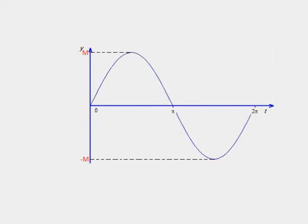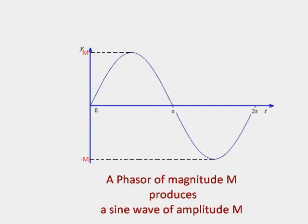The equation of the new sine wave is Y equals M sine of T. Thus, a phasor having magnitude M produces a sine wave of amplitude M.